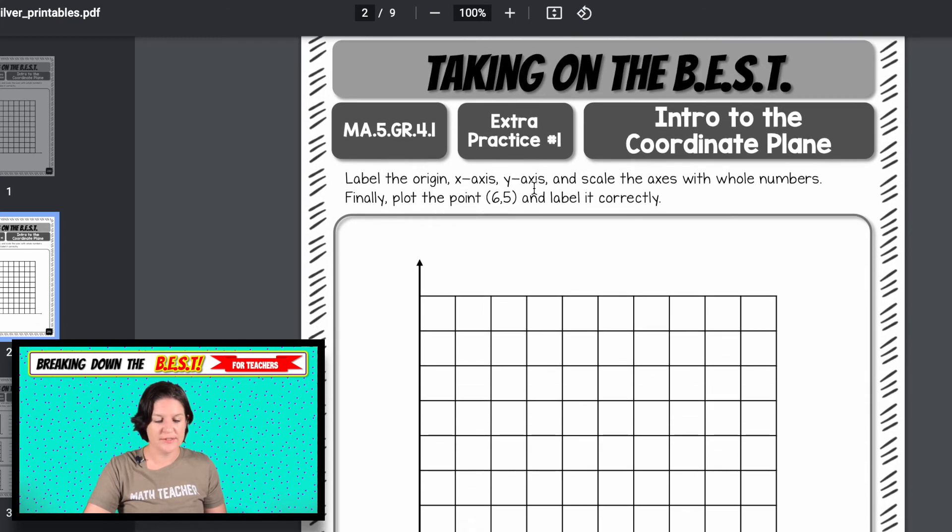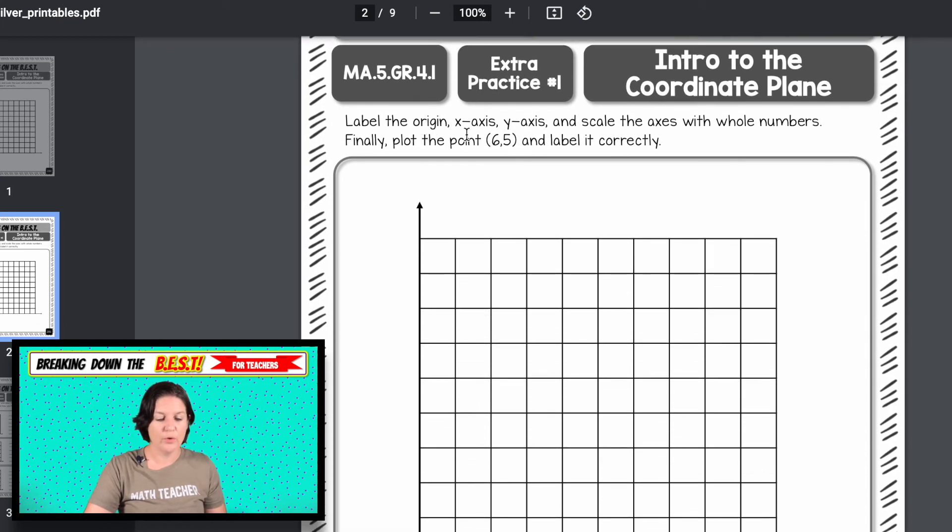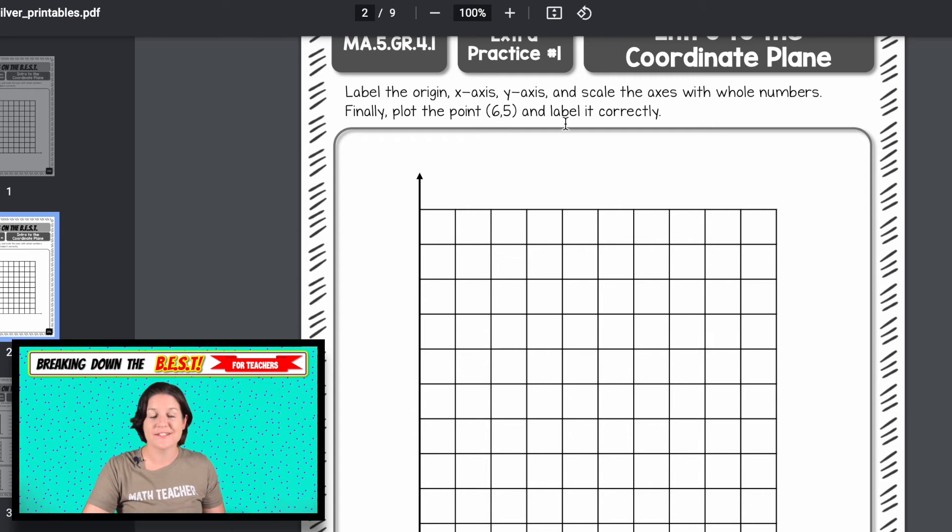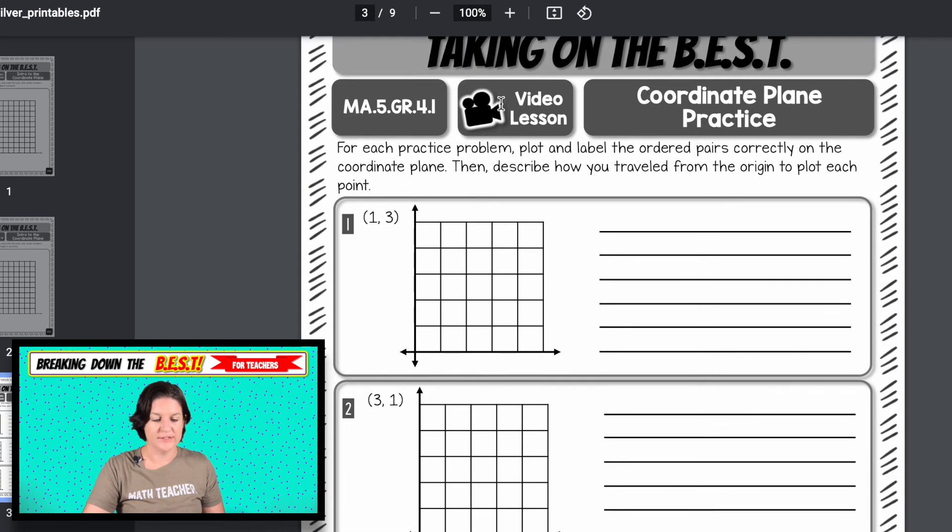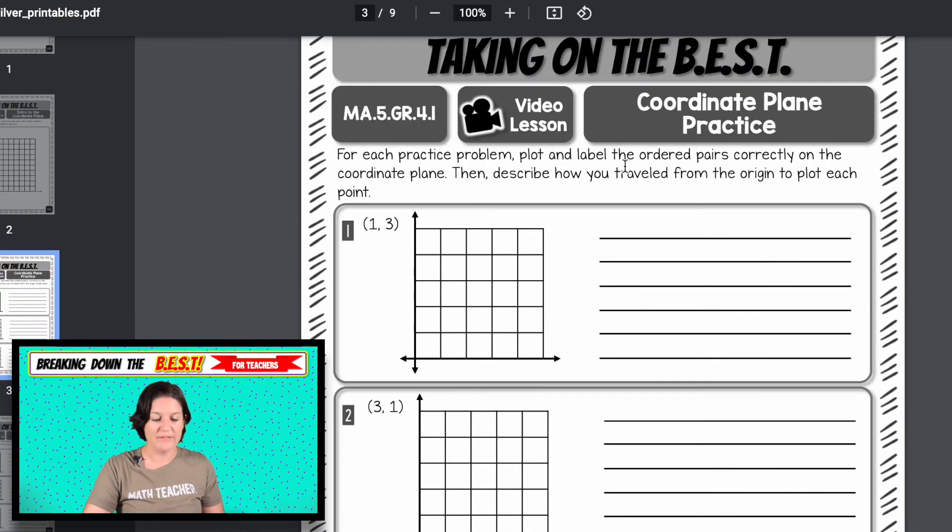And then if you keep on scrolling, then we have extra practice here. So it says label the origin, the X axis, the Y axis, go ahead and scale the axis with whole numbers and plot (6, 5) correctly. For this, this is a video lesson where we have to plot and label the order pairs correctly, then describe how you traveled from the origin to plot each point.